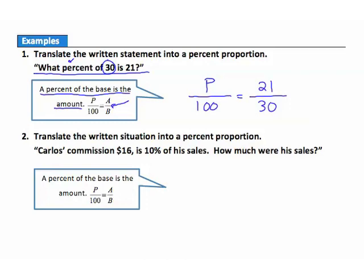Example 2. Translate the written situation into a percent proportion. Carlos' commission, $16, is 10% of his sales. How much were his sales? We start with 100. The percent is 10%, so we write 10 up there. For the base, we're taking 10% of his sales, and we don't know what his sales are, so the base is the unknown variable B. That leaves the amount as $16. The percent proportion is: 10 over 100 equals 16 over B.